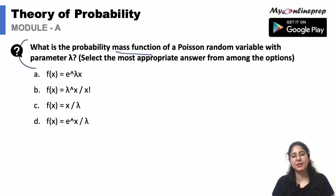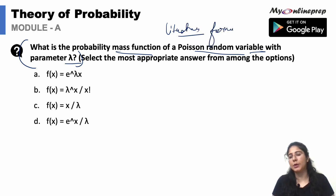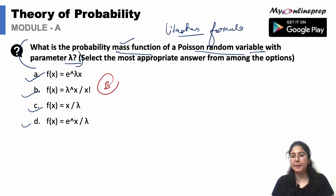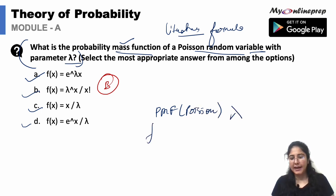What is the probability mass function of a Poisson random variable with parameter lambda? This is a formula-based question. The correct answer is option B. The probability mass function of a Poisson random variable is given by f(x) = e^(−λ) × λ^x / x!.